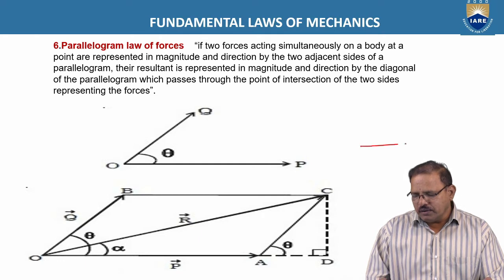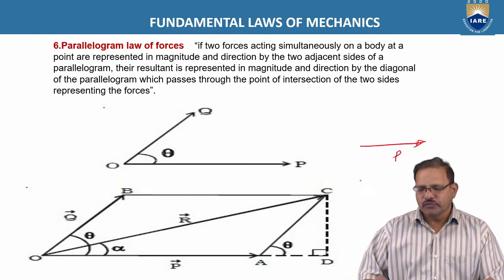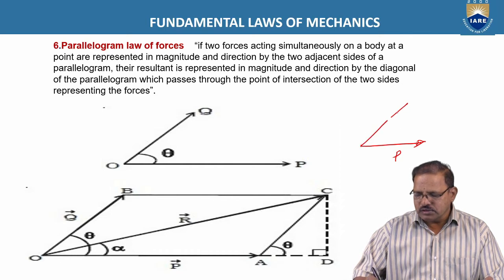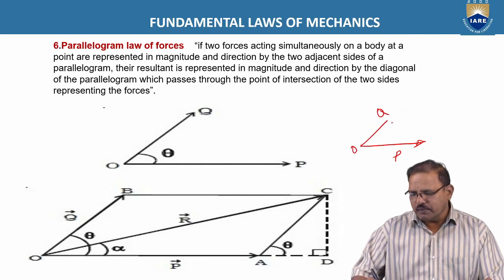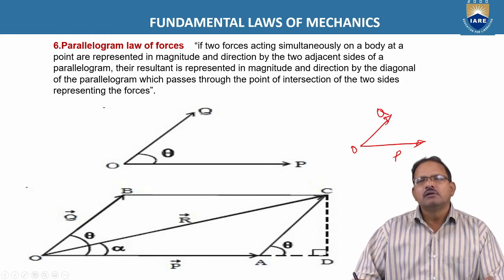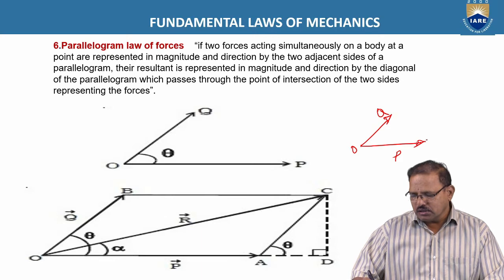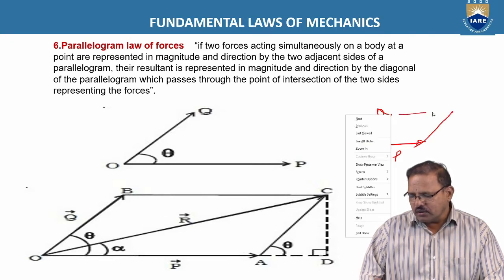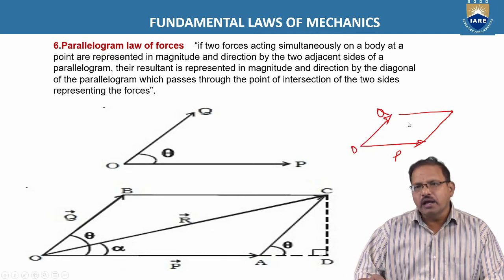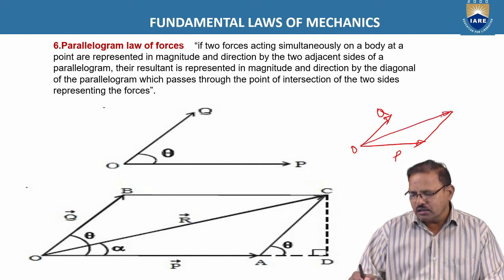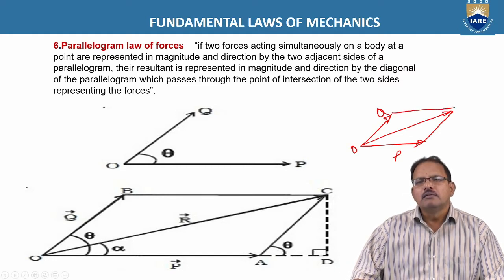Here, P and Q are two forces acting at point O. These two forces are represented as adjacent sides of a parallelogram, both in magnitude and direction. The diagonal passing through point O represents the magnitude and direction of the resultant of these two forces.